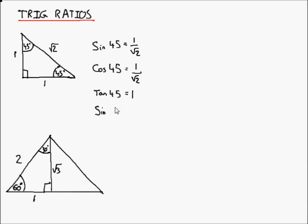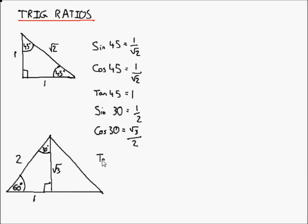Sine of 30 equals opposite over hypotenuse, which equals 1 over 2, so one half. Cosine of 30 equals adjacent over hypotenuse, which equals root 3 over 2. Tan of 30 equals opposite over adjacent, which is 1 over root 3.